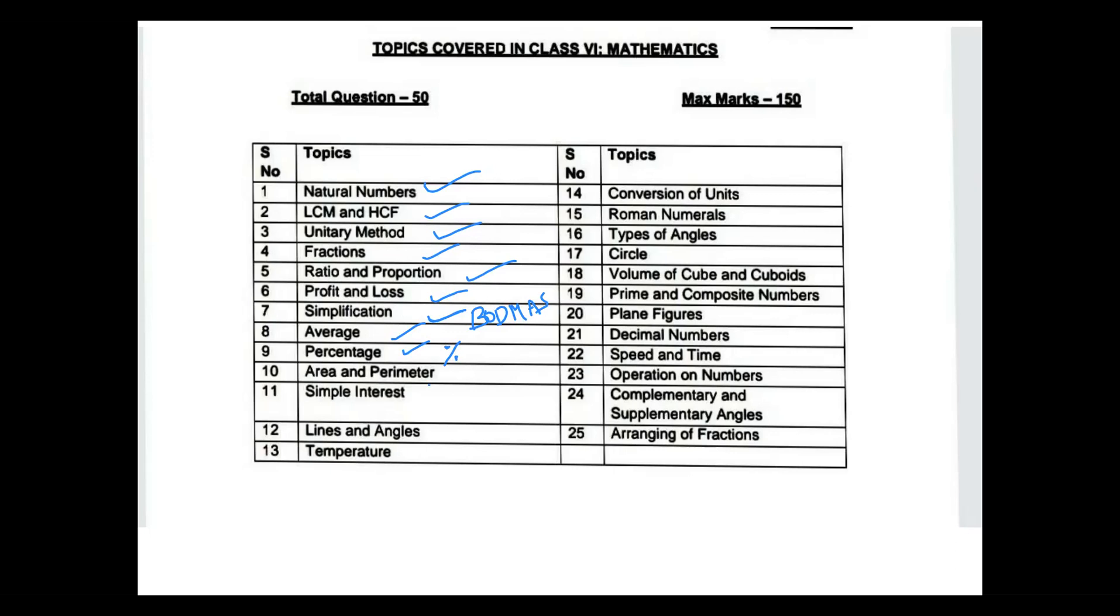Area and perimeter will cover squares, circles, triangles, and rectangles. Simple interest - you need to know the formulas. I equals to P into R into T by 100. And also you have to know the P formula, T formula, R formula. It is very important.